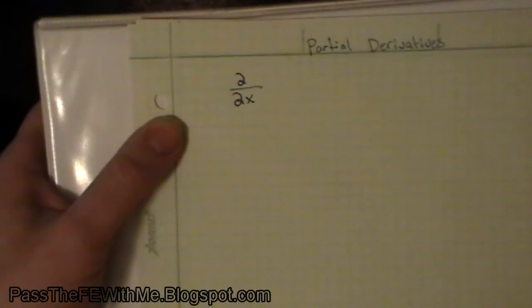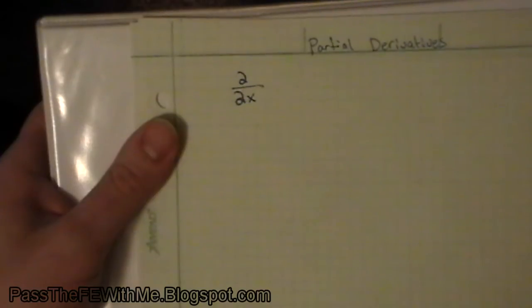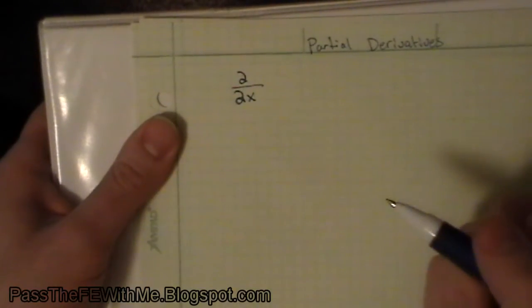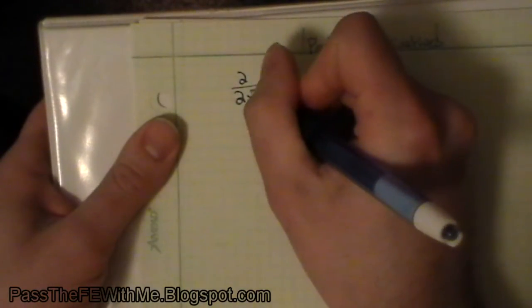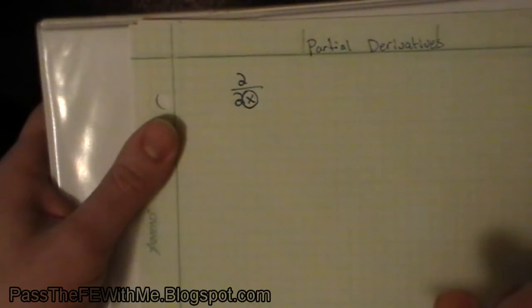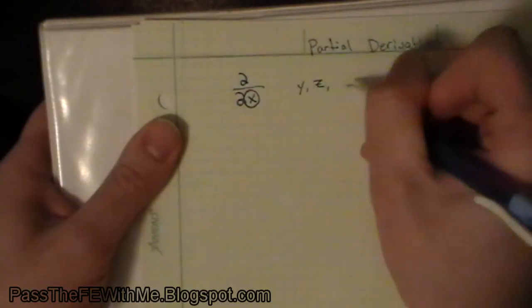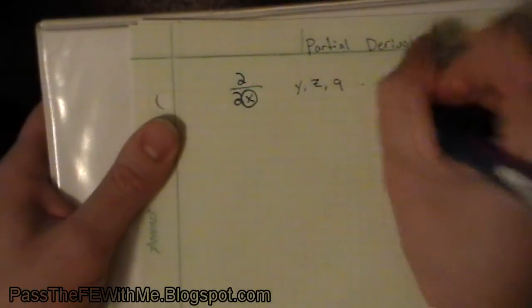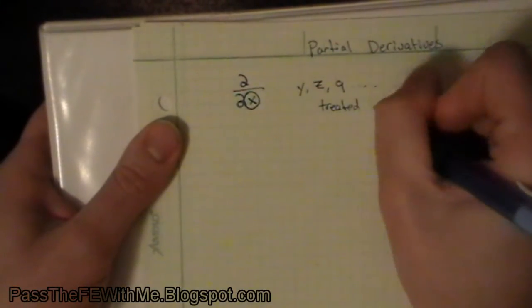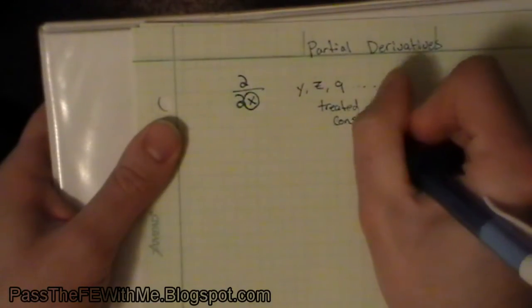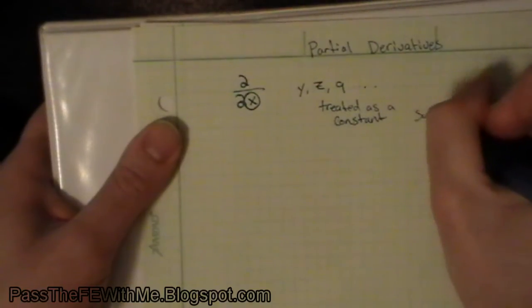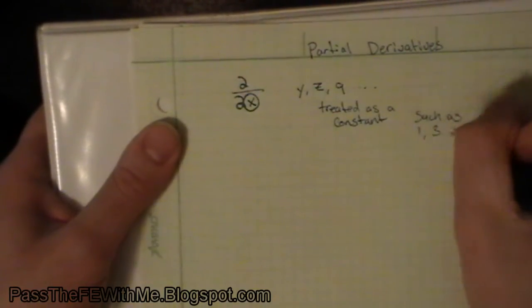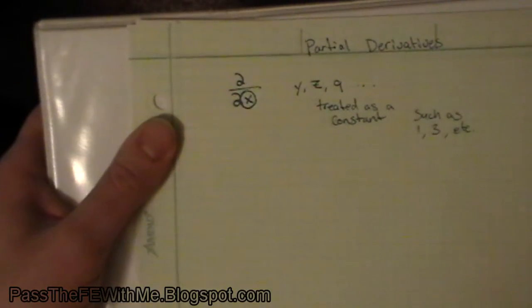The process is basically the same as taking a regular derivative. If you have your supplied reference handbook, you can turn to page 27 and you see there's this table here that has a lot of derivatives and integrals. The catch with partial derivatives is you are only taking a derivative with respect to this variable here, and the others like y, z, or q are treated as constants such as 1, 3, etc.